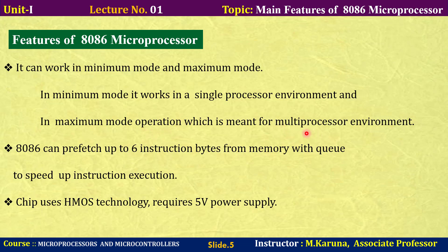Multiple processors can be used in a multi-processor environment. The 8086 can prefetch up to 6 instruction bytes from memory with the help of a queue. This speciality — the queue — was not available in previous processors.